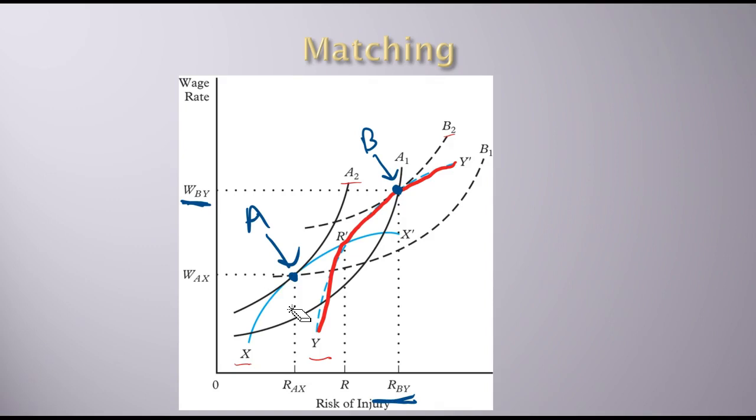The firms put out their wages, get responses, and people want to come out. The matching happens. The firm has their zero profits, the workers have their preferences, and they want to maximize their preferences. The choices are made—those combinations of wages and injury risk. These two points are called offers. W_AX, R_AX is an offer made by firm X and accepted by person A.